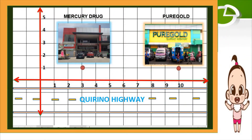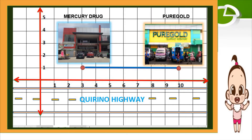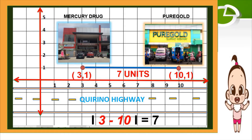Let us have this illustration. Given these two establishments drawn on the coordinate plane, what is the distance from Mercury Drug to Pure Gold, or from Pure Gold to Mercury Drug? Mercury Drug is at point (0,31) on this coordinate plane and Pure Gold is at (0,11). The horizontal distance is 7 units. By just merely counting the number of units, we can find the horizontal distance on the number line, or by simply finding the absolute difference of their x-coordinates.